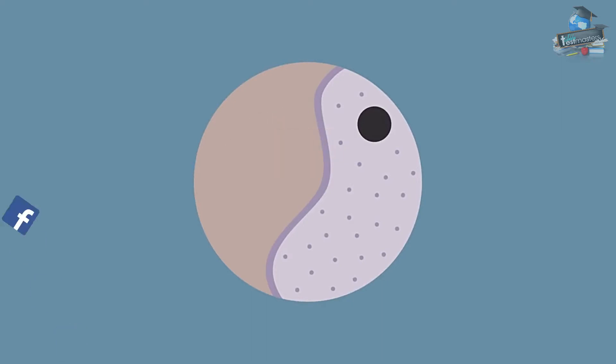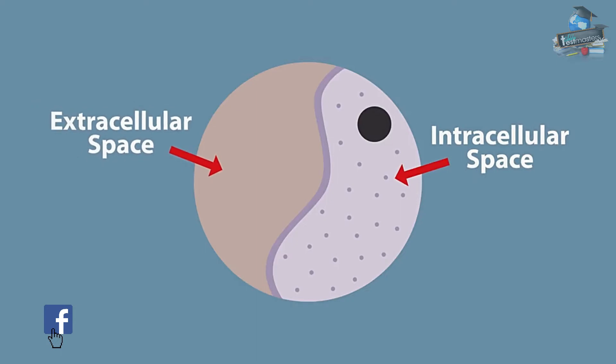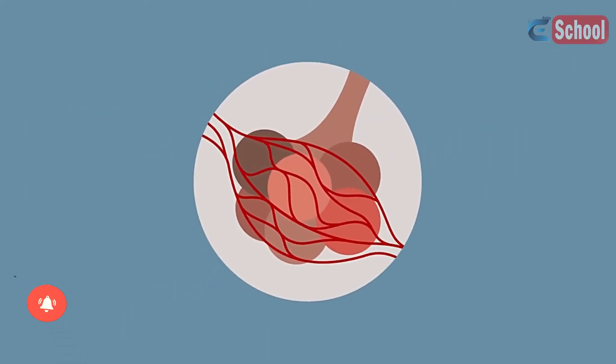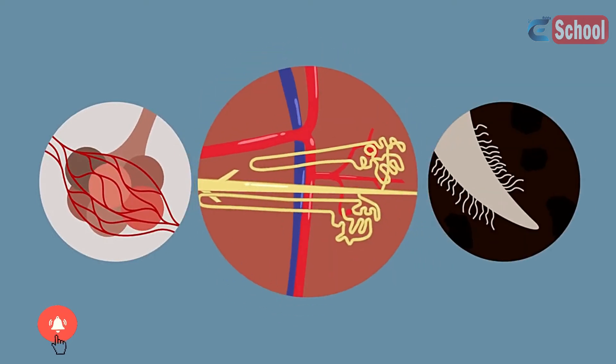The exchange of materials occurs between cells and their environment across the cell membrane. To make this exchange as efficient as possible, some organisms have evolved specialized exchange surfaces like the alveoli in the lungs, root hairs in plants, or the nephrons in kidneys.